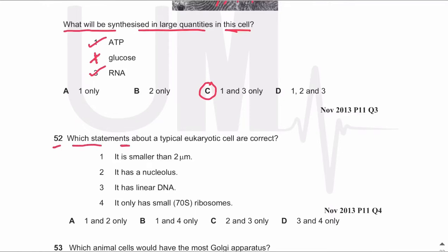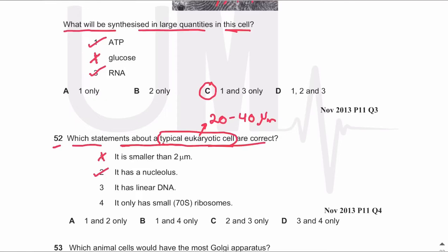MCQ number 52: which statements about a typical eukaryotic cell are correct? It is smaller than 2 micrometers — no, a typical eukaryotic cell is 20 to 40 micrometers. It has a nucleolus — yes, all typical eukaryotic cells have nuclei and nucleoli inside them. It has linear DNA — yes, the nucleus contains linear DNA. It only has small 70S ribosomes — no, eukaryotes have both 70S and 80S ribosomes. So the answer is C (2 and 3 only).